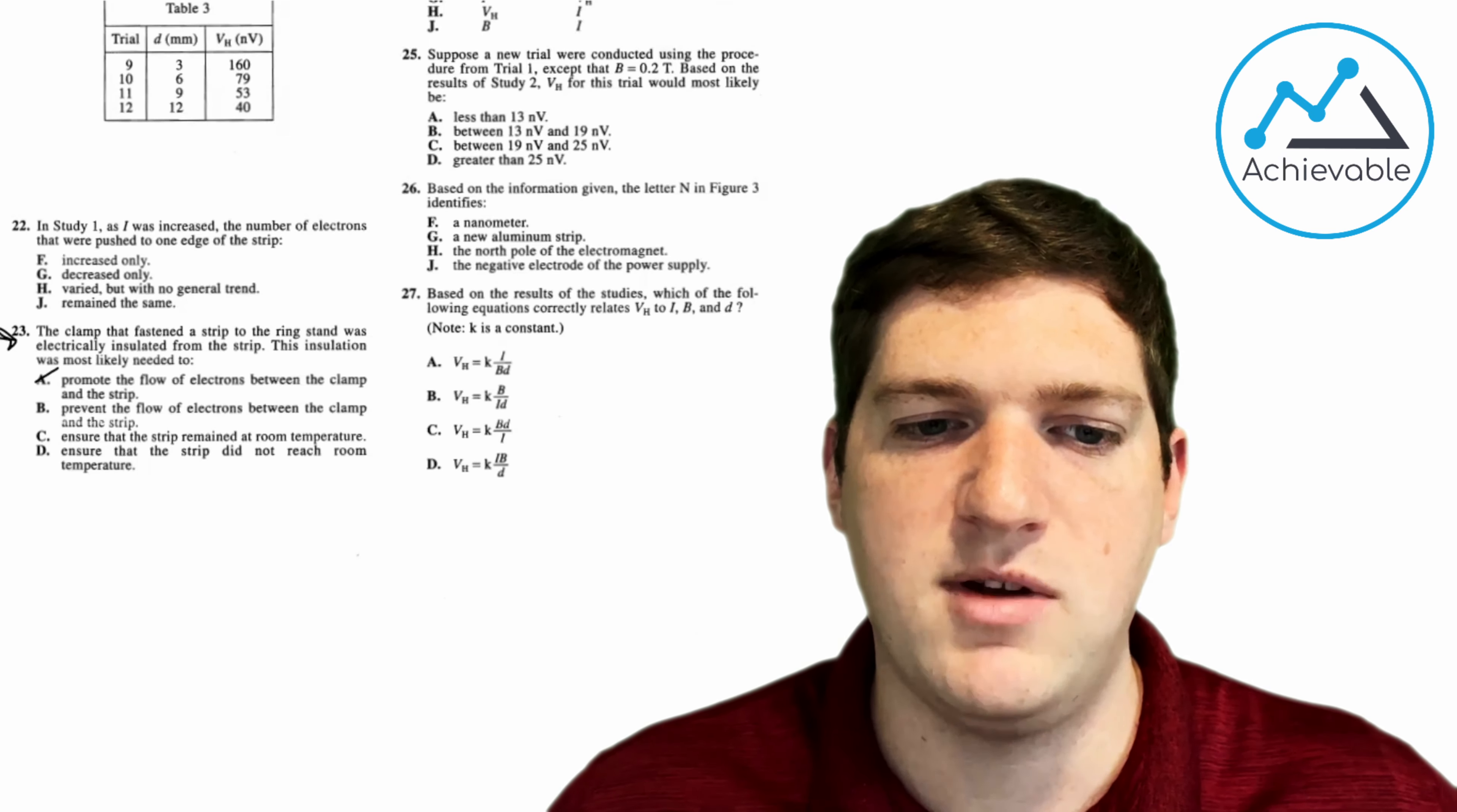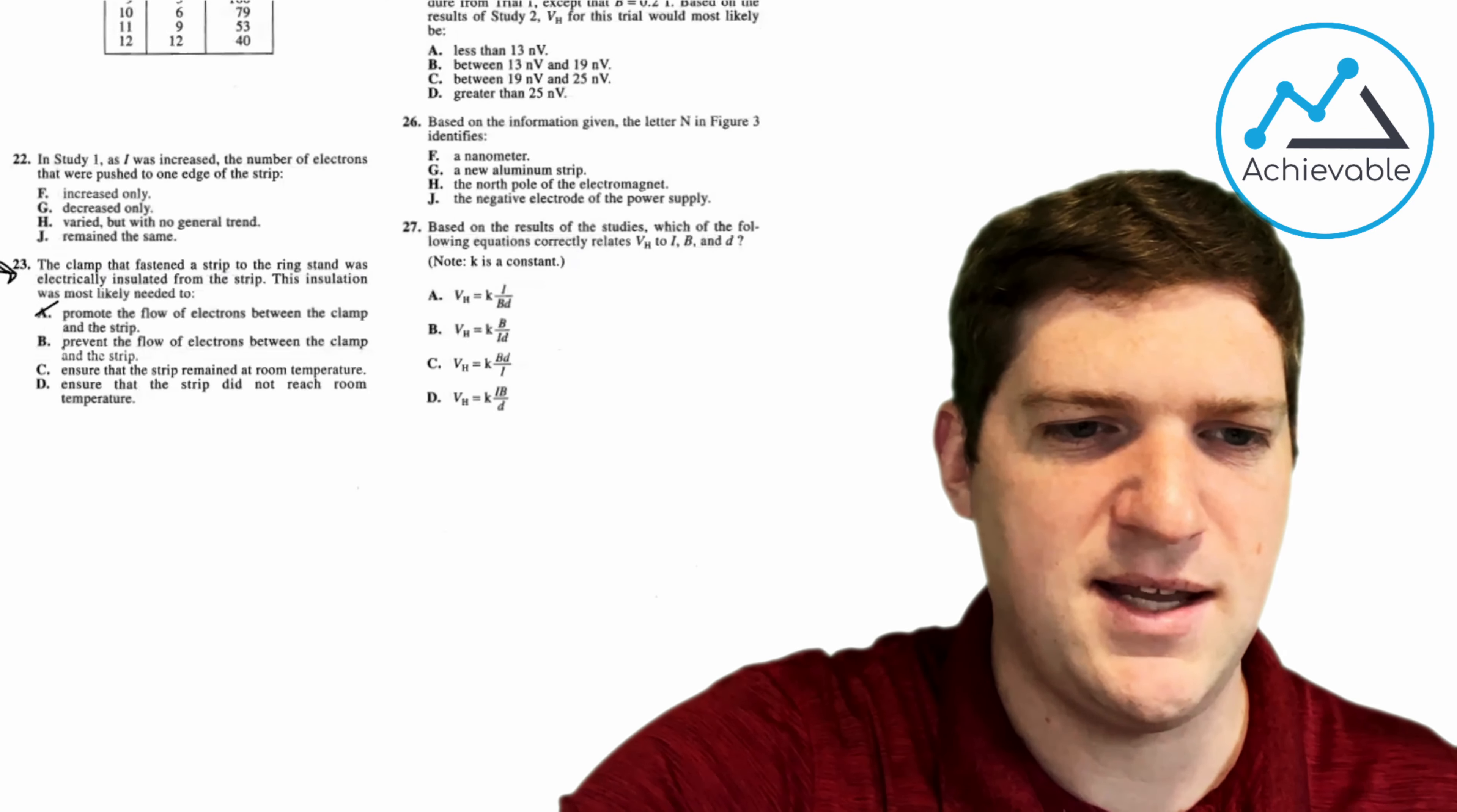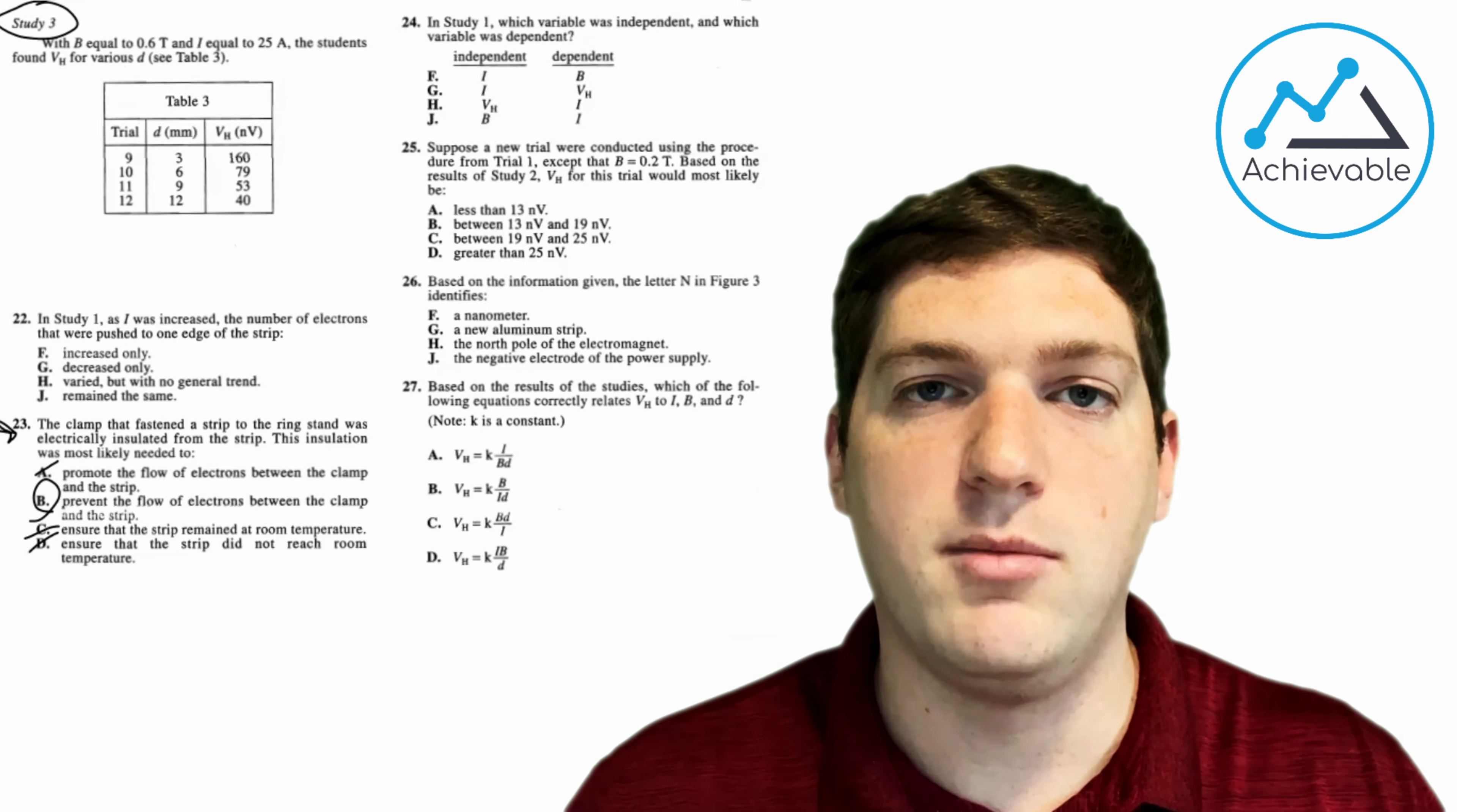Ensure that the strip remained at room temperature, or ensure that the strip did not reach room temperature. The only thing here is we've read about all these things, and we've read about current and strength, or magnetic field strength, and voltage. Nothing about temperature. So I'm going to go ahead and say that C and D are not viable. So the answer should be B. So be sure you can understand what it is that we're studying by the time that you've finished all the questions. This is typically a question I would leave for last, just because by answering all these other questions, I'll learn more about the experiment as I go through.